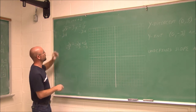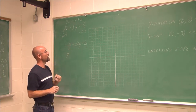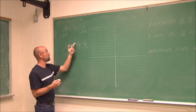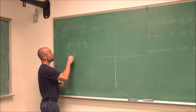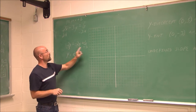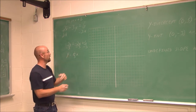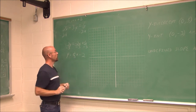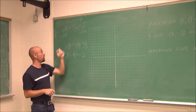Now I need to get y by itself, so I divide both sides by negative 3 to eliminate the coefficient. Negative 2 over negative 3 — a negative over a negative is positive — gives me 2 thirds times x. And 6 over negative 3 — a positive over a negative is negative — gives me negative 2. The equation is now in slope-intercept form.